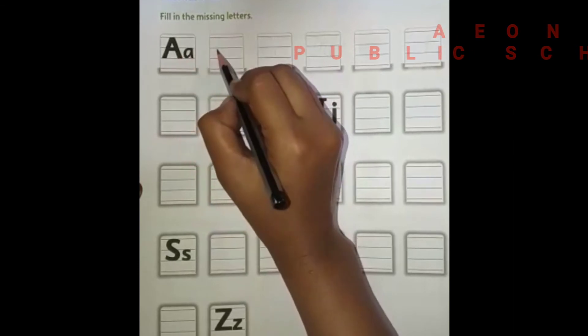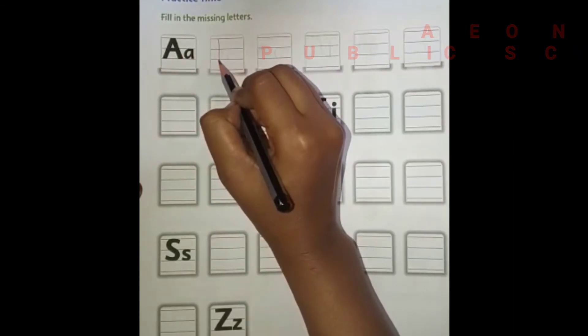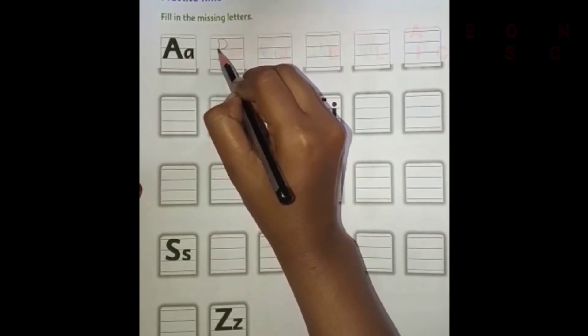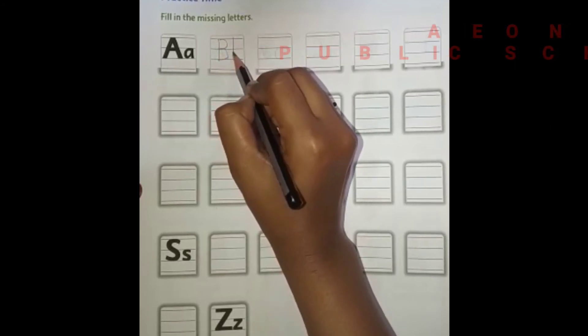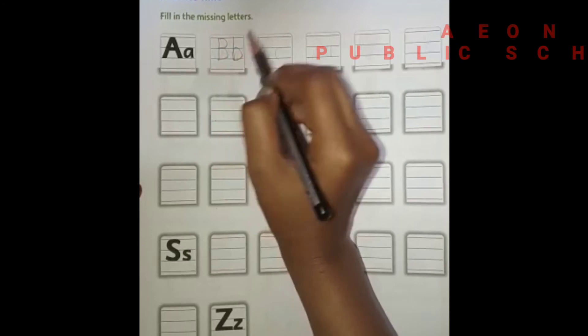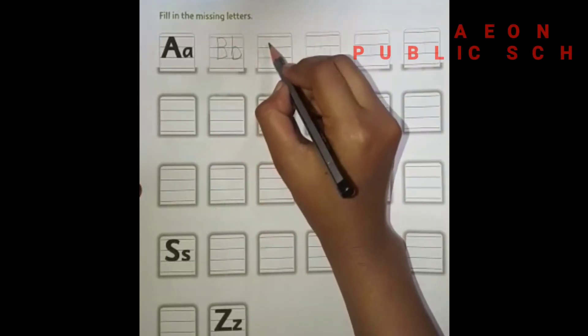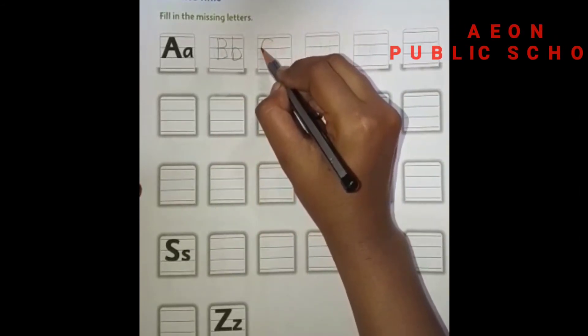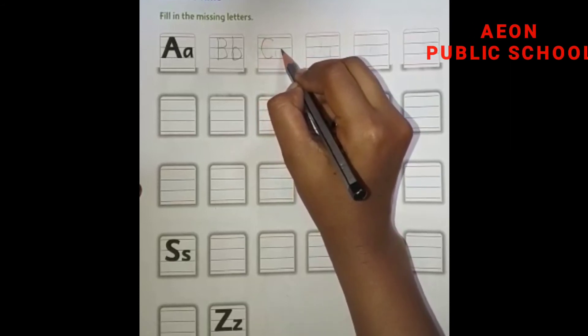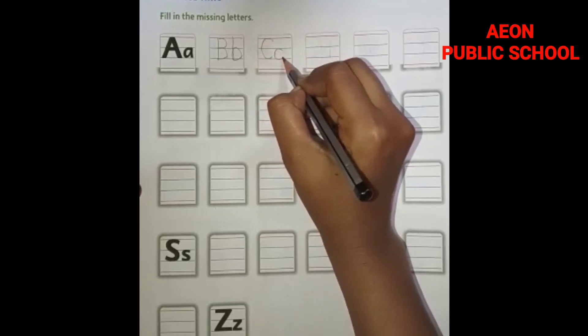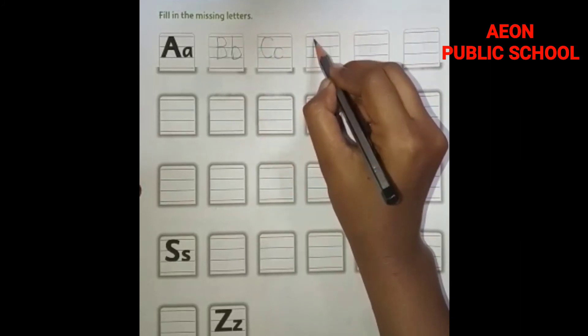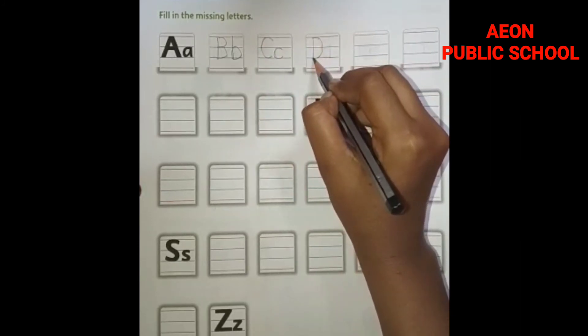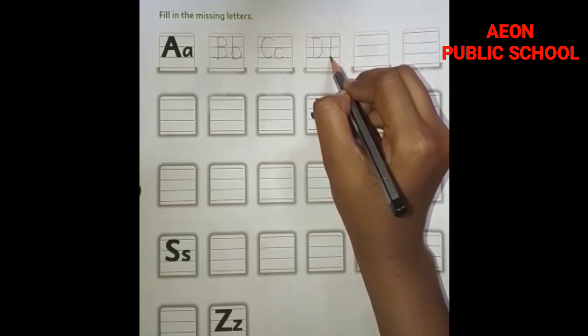So after A what is this? B. So write B. B for ball. Then after B what is C. Good. You know. After C what is D. By this complete the page.